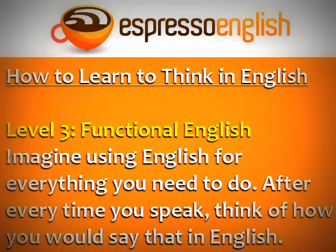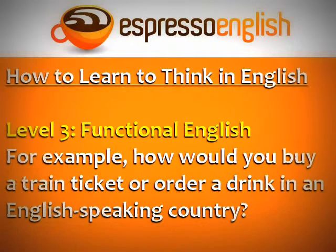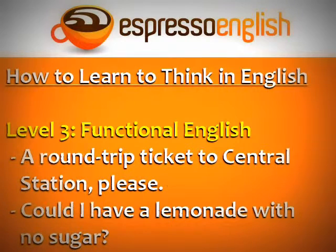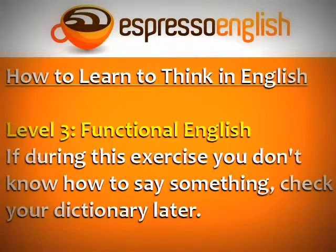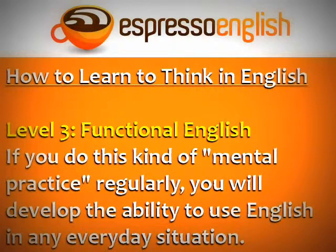Level 3 is functional English. On this level, you imagine having to use English for everything that you need to do. After every time you speak in your native language, think of how you would say that in English. For example, how would you buy a train ticket or order a drink in an English-speaking country? A round-trip ticket to Central Station, please. Could I have a lemonade with no sugar? This helps develop your English for real-life situations, even though you are only thinking and not speaking. If during this exercise you don't know how to say something, check your dictionary later. If you do this kind of mental practice regularly, you will develop the ability to use English in any everyday situation.